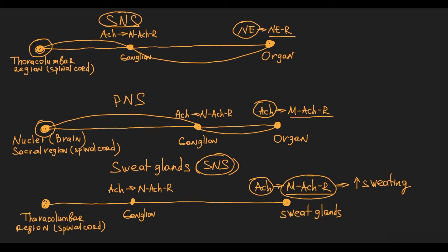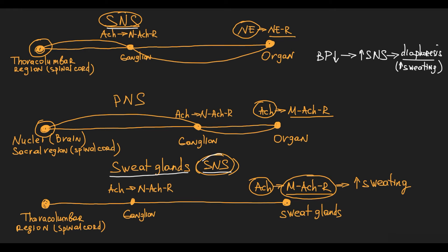This is a tricky concept. For example, when blood pressure rapidly decreases, the sympathetic nervous system becomes activated to maintain blood pressure, and simultaneously patients experience diaphoresis — excessive sweating — because sweat glands are innervated by the sympathetic nervous system. In this physiological context, the type of receptor on sweat glands is less important; what matters is that sympathetic activation drives sweating.